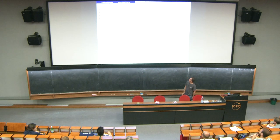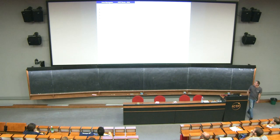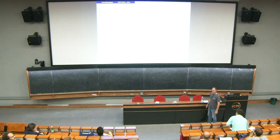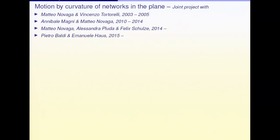Actually it's a long project that started 15 years ago, more or less, with Matteo Novaga and Vincenzo Tortorelli when I was in Pisa. Then we had a period where we simply weren't able to find new results. We started again with Arnibale Magni, my ex-PhD student, and Matteo Novaga again in 2010. More recently with Matteo Novaga and Alessandra Pluda, who is here, ex-PhD student of Matteo, now in Regensburg, and Felix Schulze — one of the competitor groups composed by Felix Schulze, Andre Neves, and Tom Milvanen. Very recently, a couple of colleagues in Naples, Pietro Baldi and Manuele House, started to contribute to the subject, in particular to the classification of self-similar solutions in network flow.